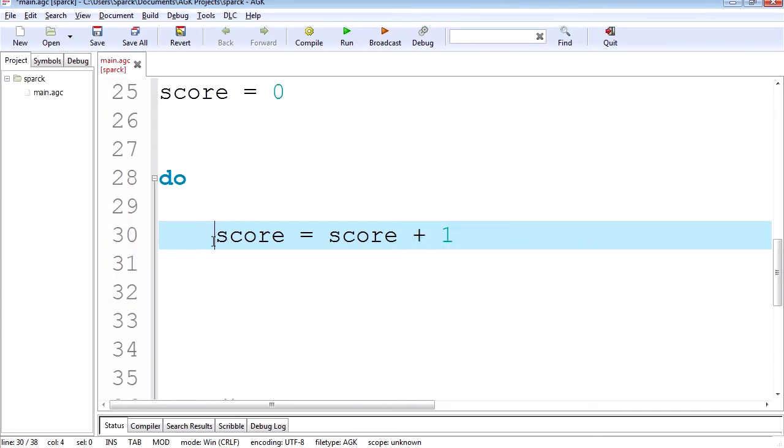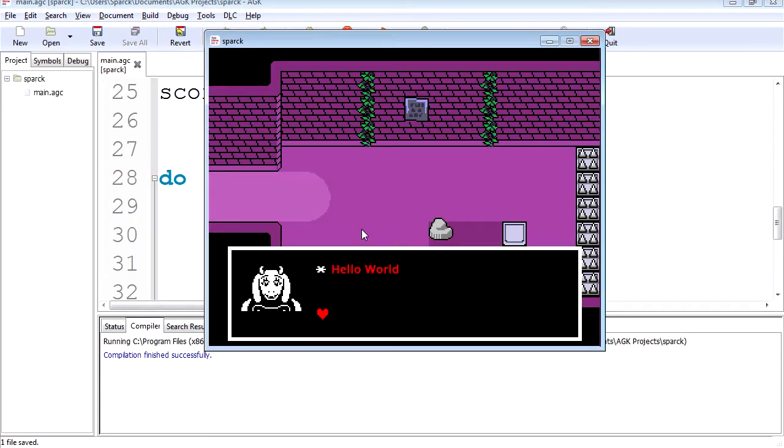Now since we typed this inside the do, this will continue to happen. Actually this will increase this variable by one every millisecond. Alright, so if you run this now, you're going to notice that nothing happens. And it's actually increasing the variable but you just can't see it. So we have to output it to text so we can see it.